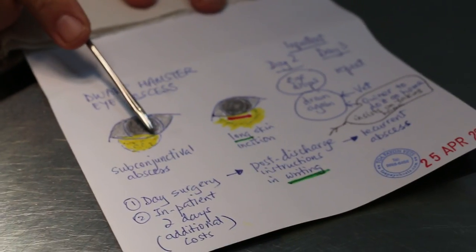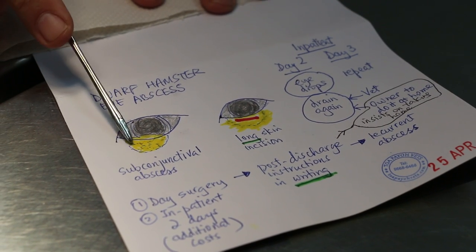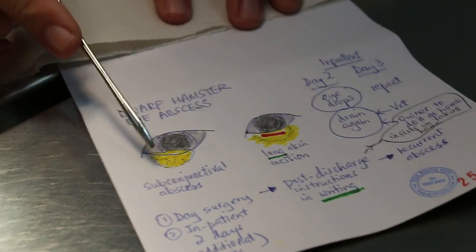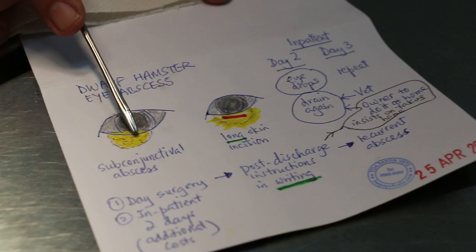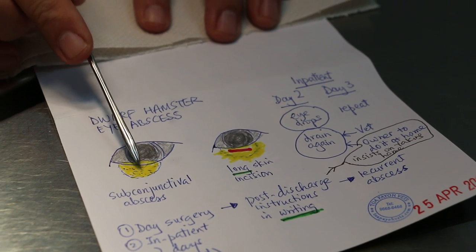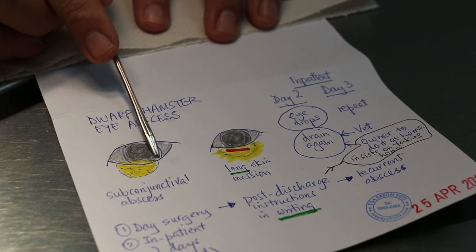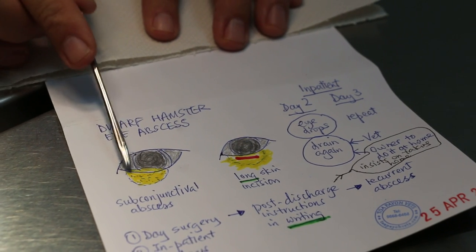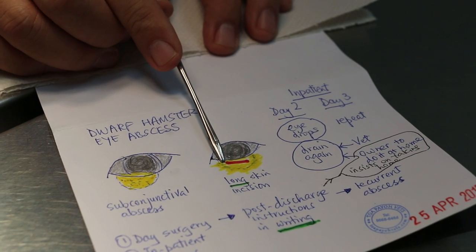The hamster sometimes gets this subconjunctival abscess where it is below the lower eyelid or sometimes the upper eyelid. This subconjunctival abscess needs to be lanced and drained. Otherwise, the hamster keeps rubbing the eyes. Usually the owner waits until the abscess is very big, like in this case, and then sees a vet. This case has to be lanced quite a big one — quite a long incision.